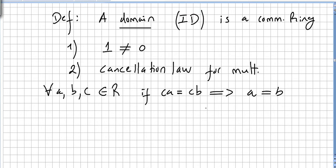Of course, C cannot be zero. Right? So if CA is equal to CB, the cancellation law holds here.